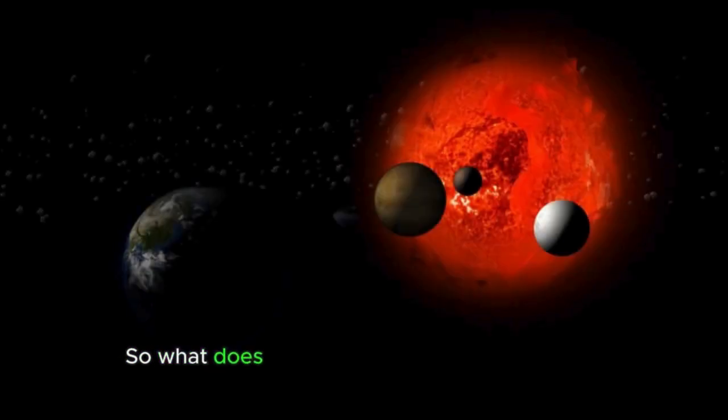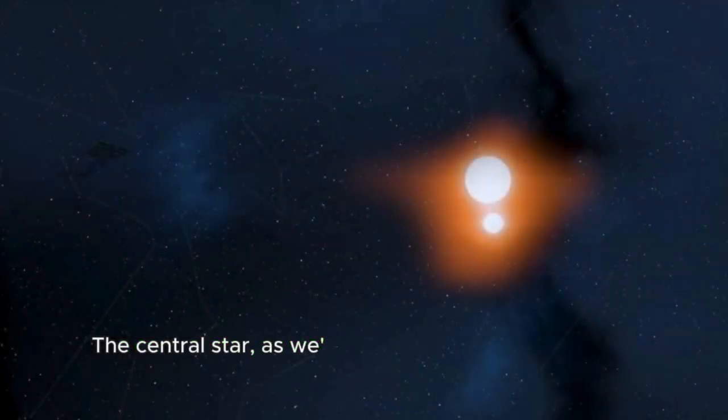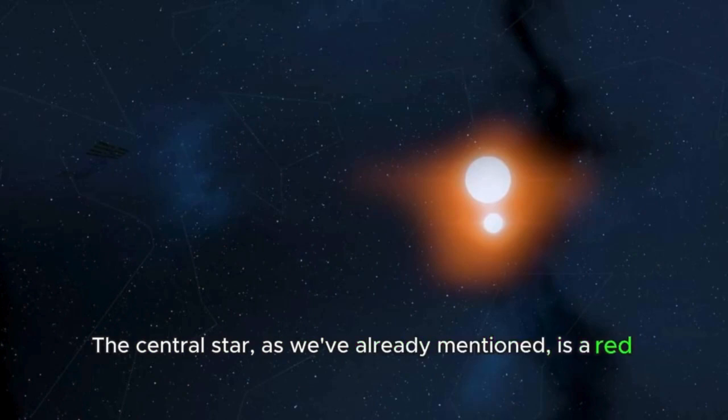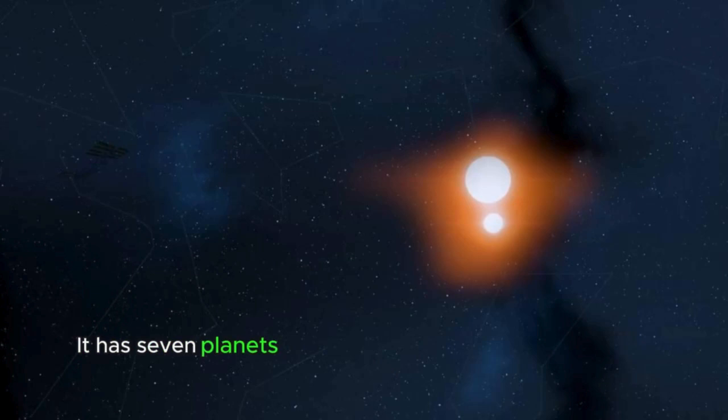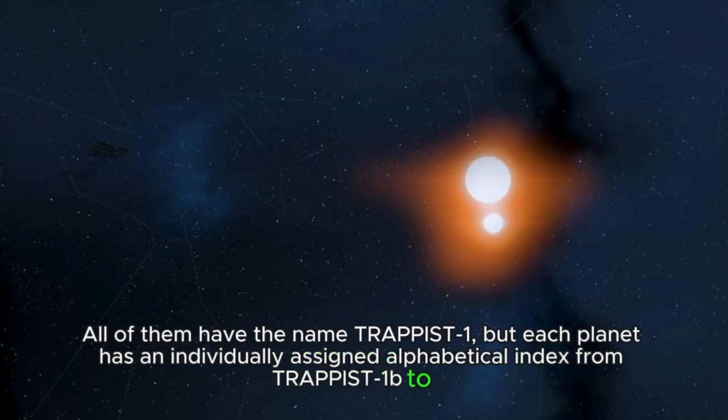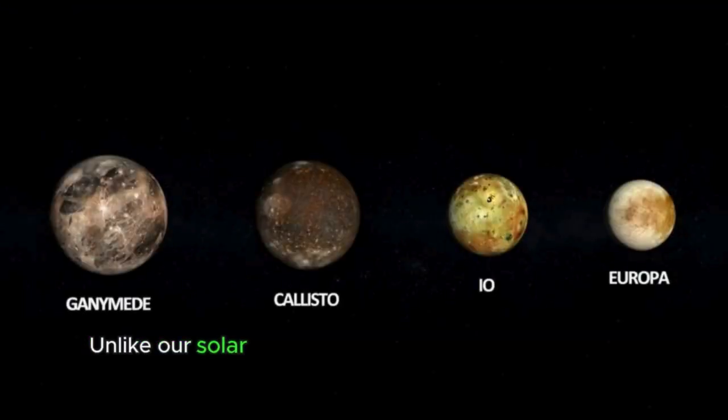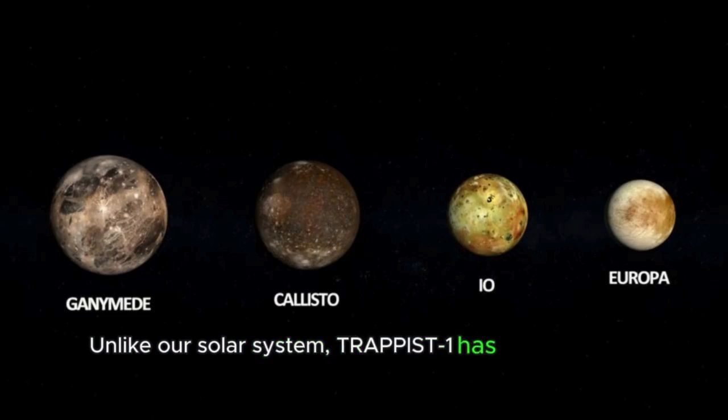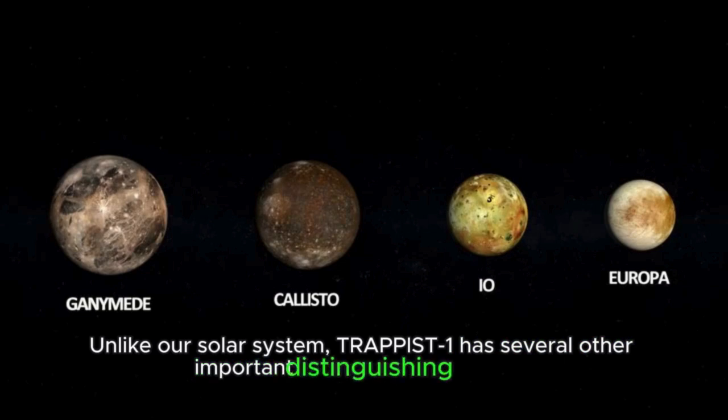So what does the TRAPPIST-1 system look like? The central star, as we've already mentioned, is a red dwarf. It has seven planets revolving around it, roughly the size of Earth. All of them have the name TRAPPIST-1, but each planet has an individually assigned alphabetical index from TRAPPIST-1b to h. Unlike our solar system, TRAPPIST-1 has several other important distinguishing features.